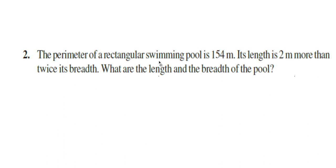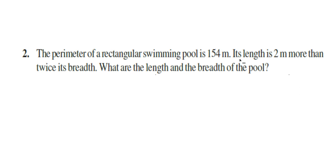Here is the next question. The perimeter of a rectangular swimming pool is 154 meters. Its length is 2 meters more than twice its breadth. What are the length and breadth of the pool? If you know the length and breadth, you can find out the perimeter of a rectangle by 2 into (l plus b). But length and breadth are not given here; instead, a condition is given. Length is 2 meters more than twice its breadth.